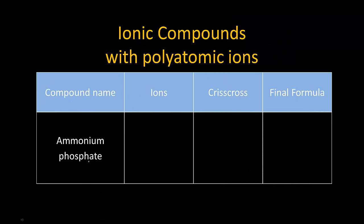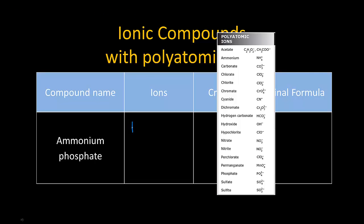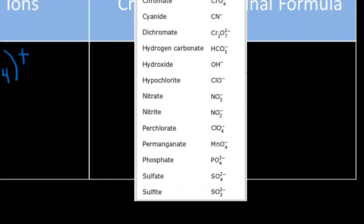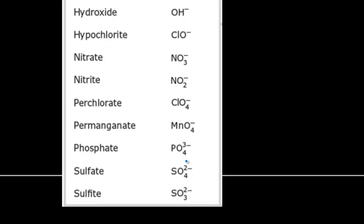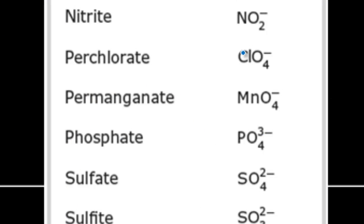Next example: ammonium phosphate. Ammonium is NH₄⁺ — it is the only positively charged polyatomic ion on your chart, so just memorize it. You won't find it on the periodic table. This one nitrogen and four hydrogens has a plus one charge. Phosphate ends in -ATE, so you look it up on the polyatomic ion chart. Phosphate is PO₄³⁻ — put it in parentheses with a minus three charge.